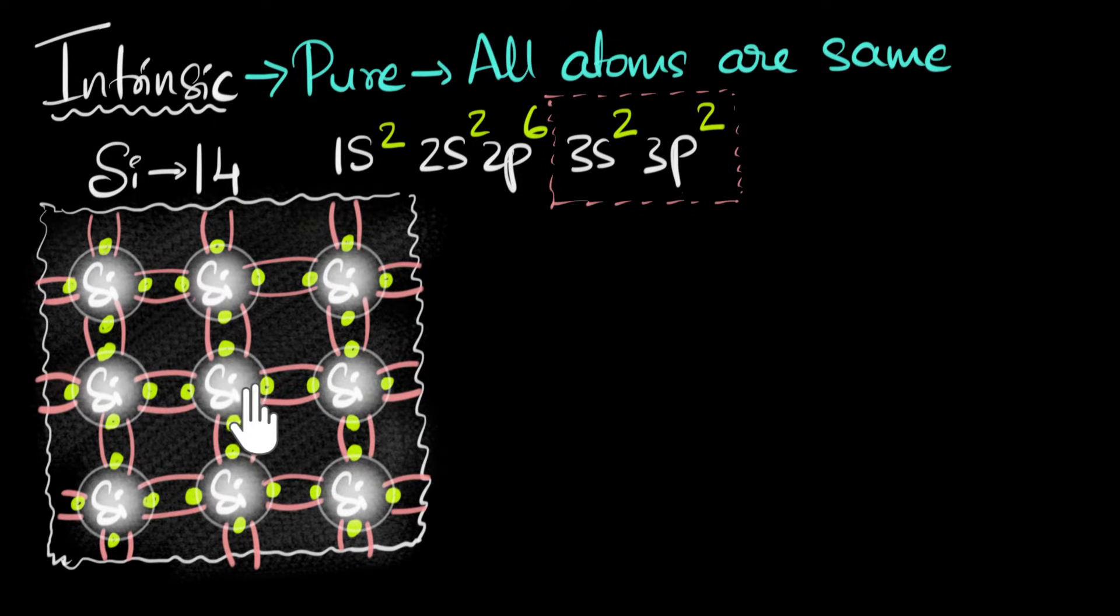And so as a result, notice each silicon atom has now 8 electrons in its vicinity. So you have 1, 2, 3, 4, 5, 6, 7, 8.